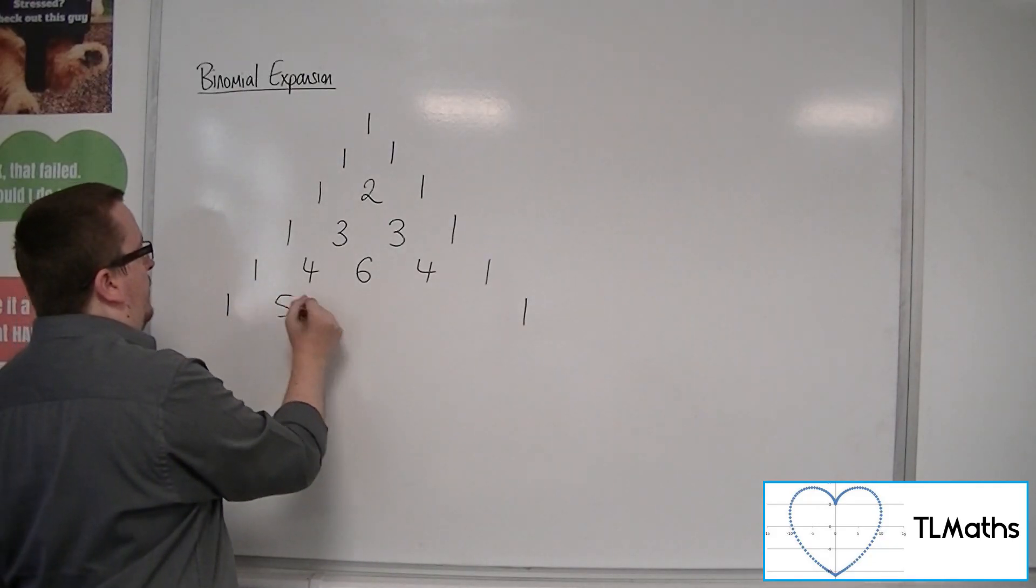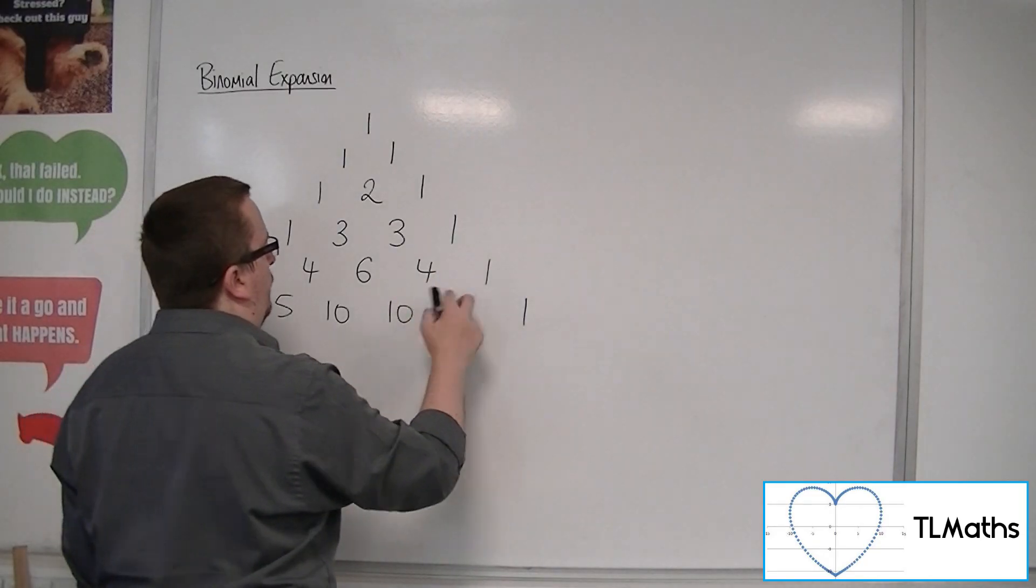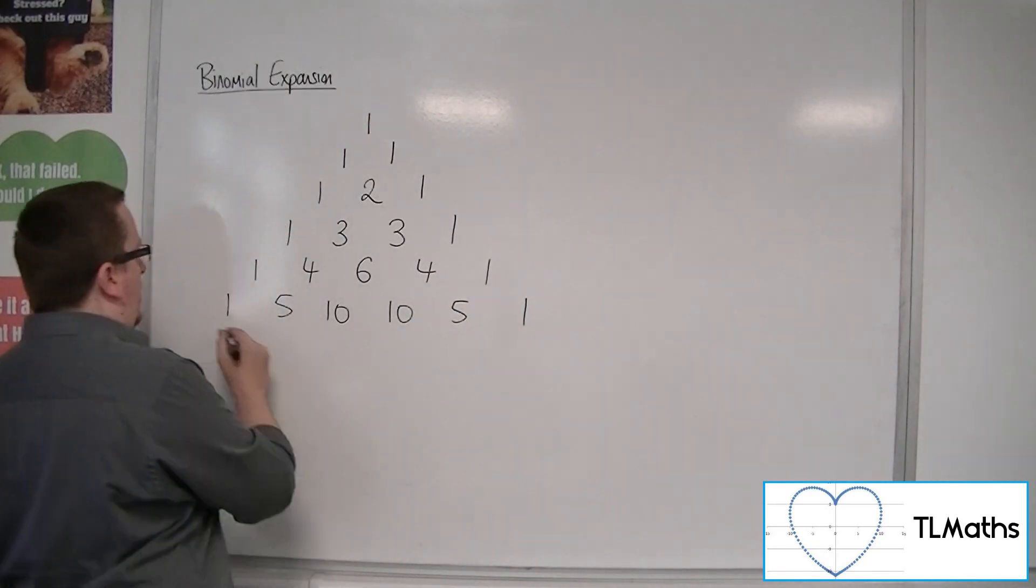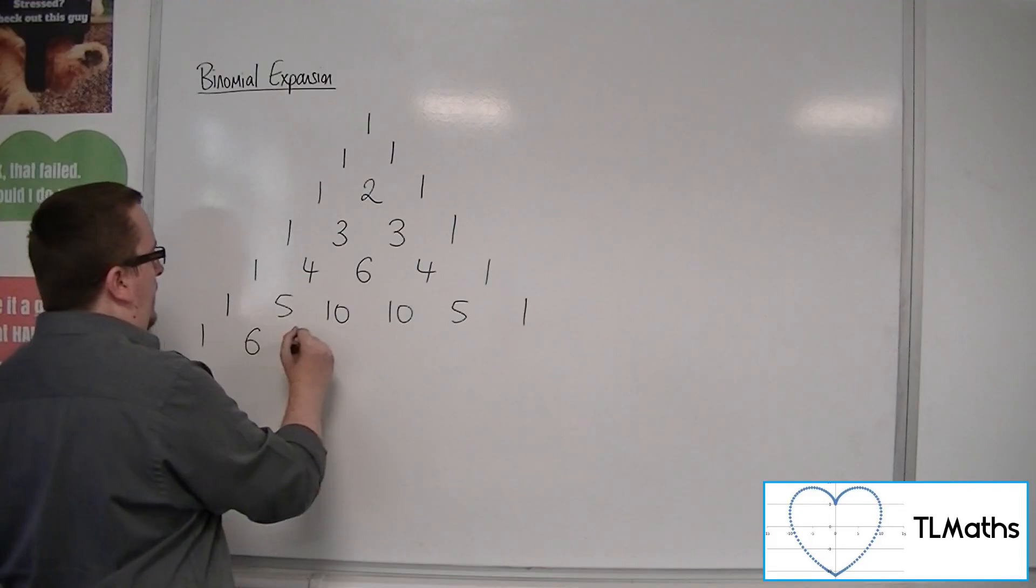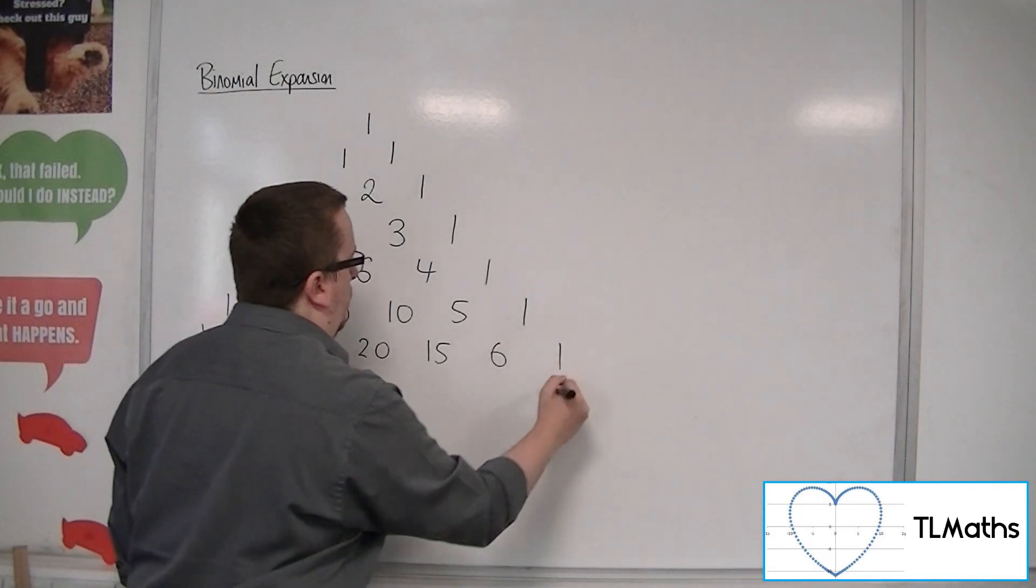The next row: 1 and 4 is 5, 4 and 6 is 10, 6 and 4 is 10, 4 and 1 is 5. So the next row would be 1, 6, 15, 20, 15, 6, 1.